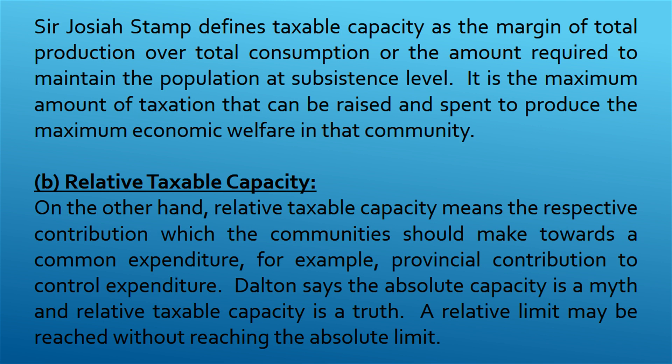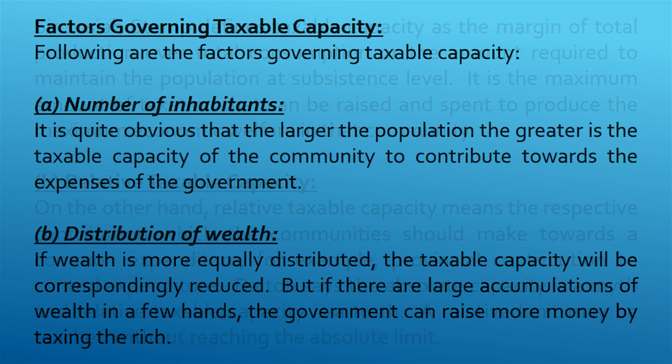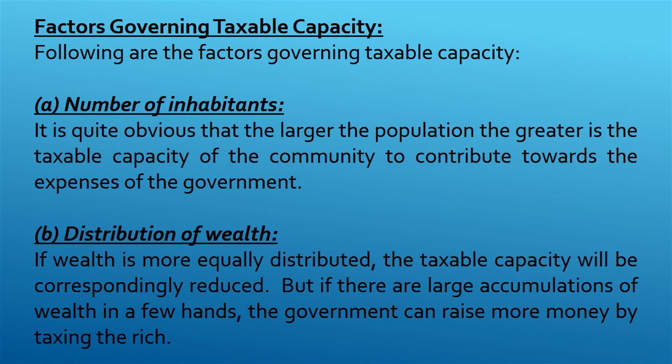Second, relative taxable capacity means the respective contribution which communities should make towards a common expenditure — for example, provincial contribution to central expenditure. Dalton says the absolute capacity is a myth and relative taxable capacity is a truth. A relative limit may be reached without reaching the absolute limit.